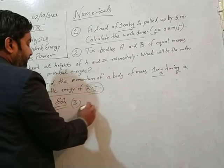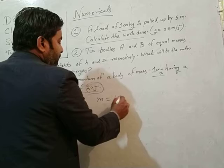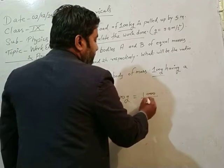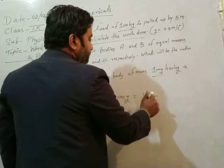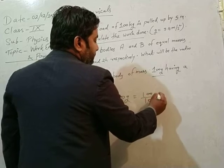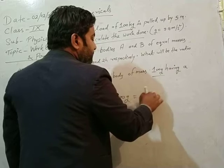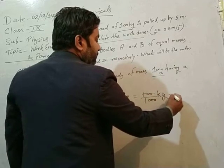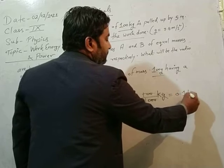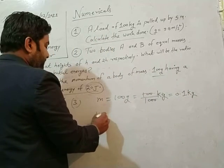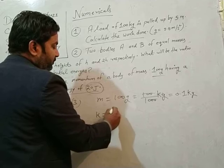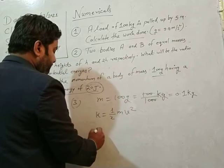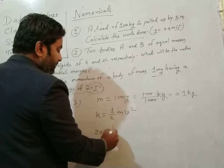Solution number third: m is equal to 100 grams, so that is equal to 100 upon 1000. Two zeros cancel, that is equal to 0.1 kg. And kinetic energy K is equal to one-half mv square, and K is equal to 20.